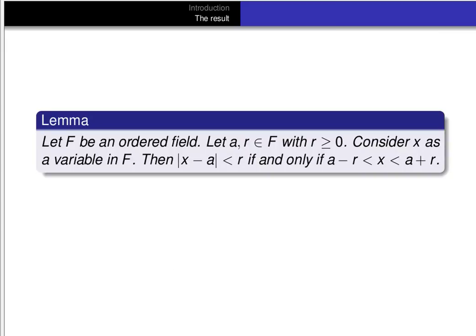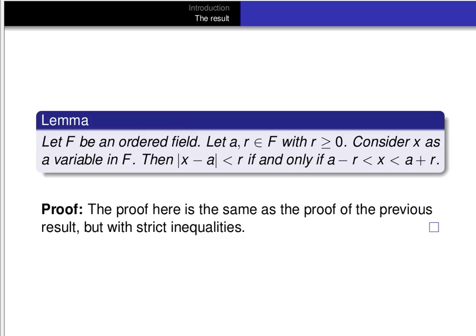Part 4 is the same statement as part 3, but with strict less-than signs instead of less-than-or-equal-to signs. The proof is the same as the proof of the previous result, but using strict inequalities. So it's a good exercise to try to work through that and write it out.